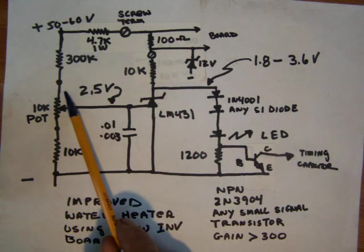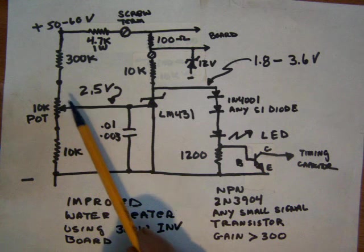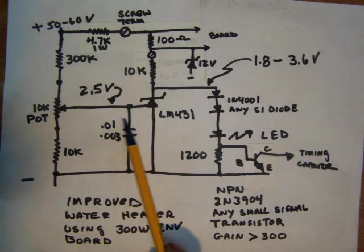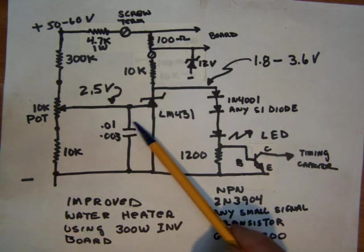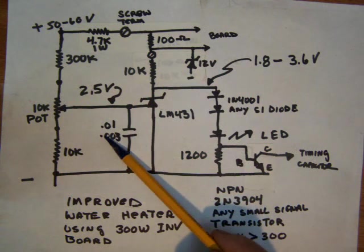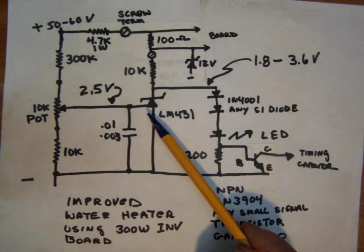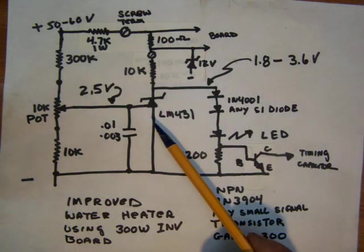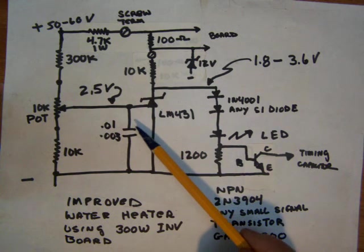So ideally what you're looking for is something around 3 volts, 3.5 volts here, and 1.82 volts down here. That will give you a lot of adjustment range here. This capacitor provides a little bit of filtering.